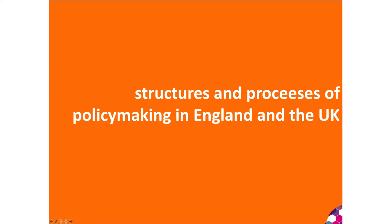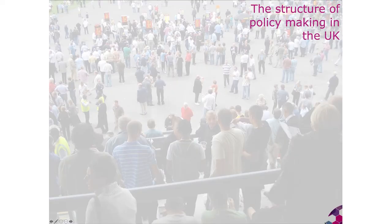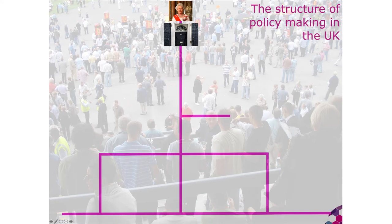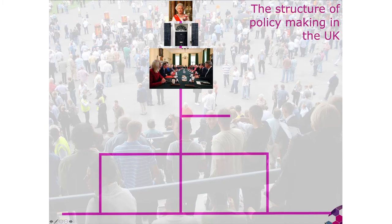Let's start with looking at the structures and processes of policymaking in England and the UK. We start with the Queen who is the Head of State of the United Kingdom — she is a constitutional monarch and is the head of the policymaking structures of the UK. Below her, and the person with the most power in the UK, is the Prime Minister, and below him or her is the cabinet.